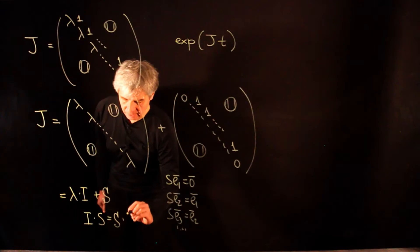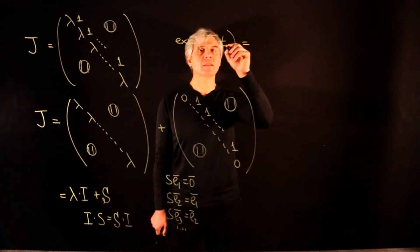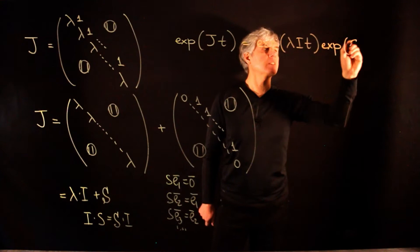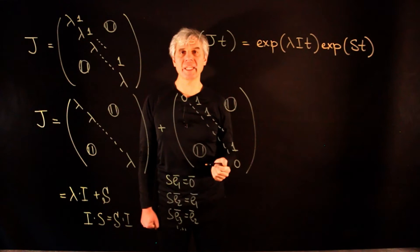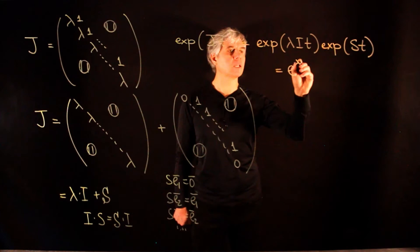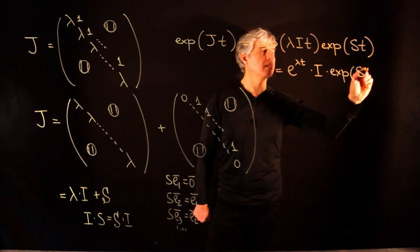We point out that these two matrices commute, since identity times S equals S times identity. This allows us to apply our lemma: the exponential of the Jordan block is the product of the exponential of λIt times the exponential of St. The first factor is easy: the exponential of a diagonal matrix is diagonal with exponentials of individual entries, giving e^(λt) times the identity matrix.